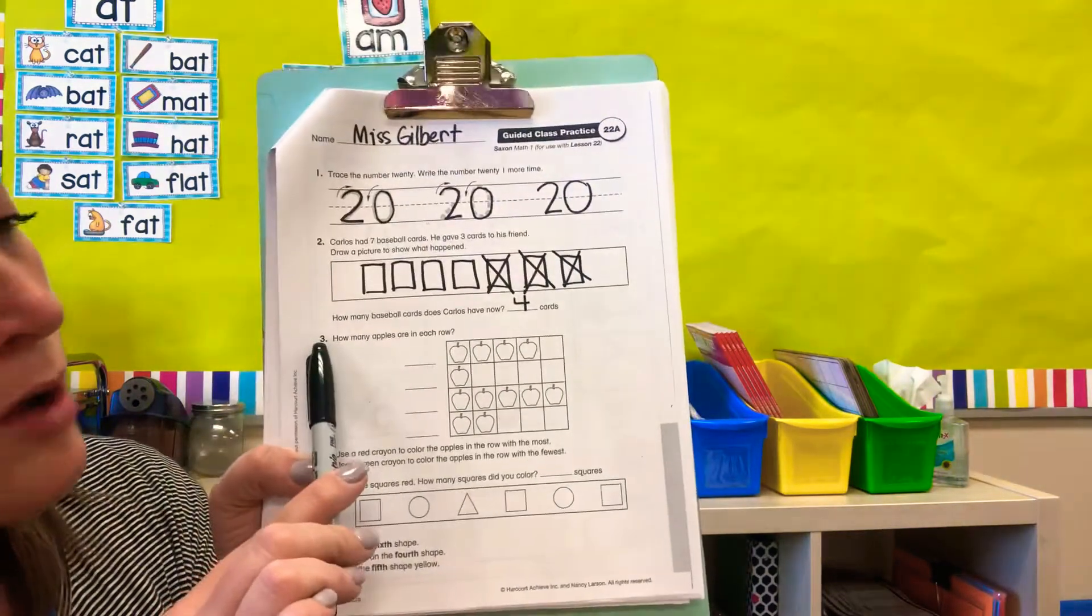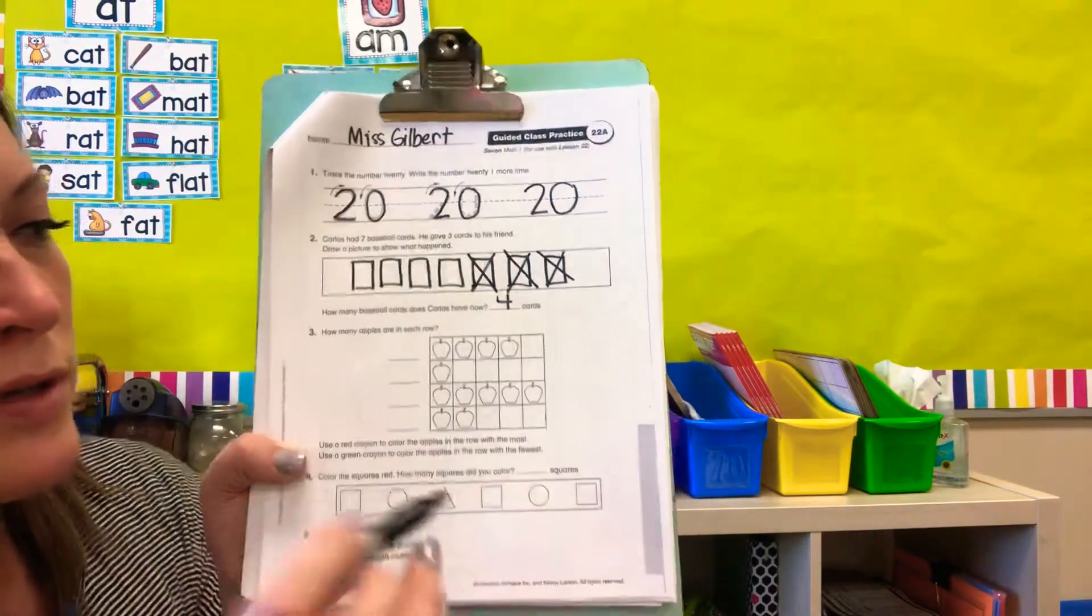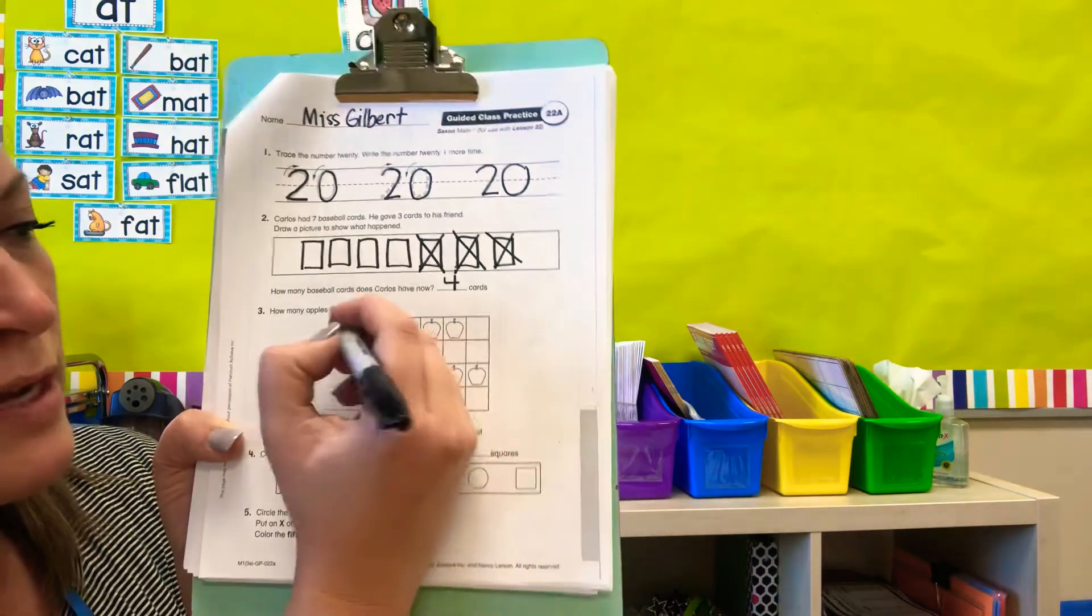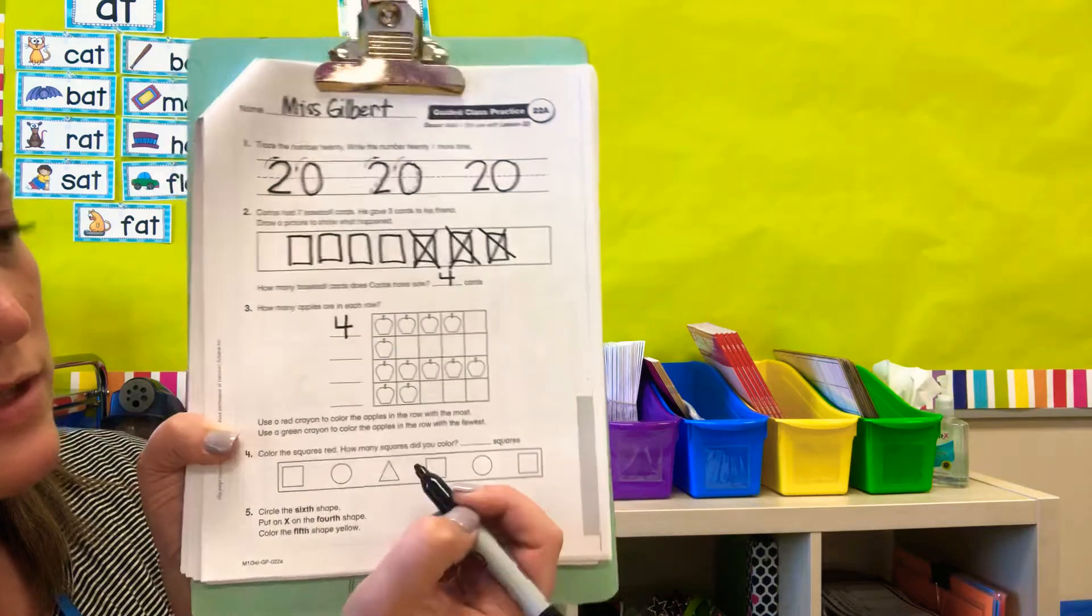Number three. How many apples are in each row? Go ahead and count the apples. One, two, three, four. Write the number on the line next to the row. How many apples in the second row? One.